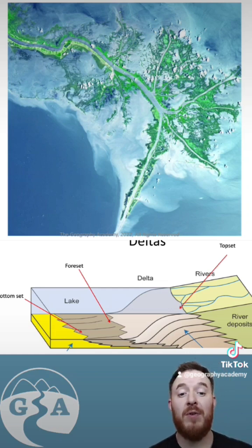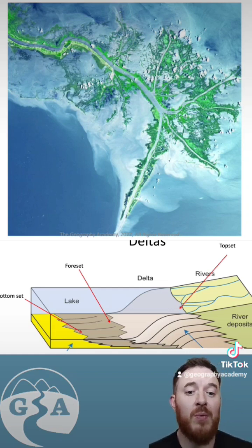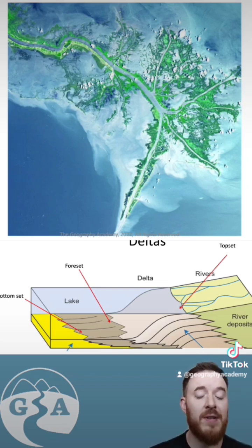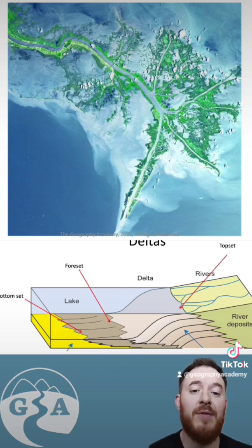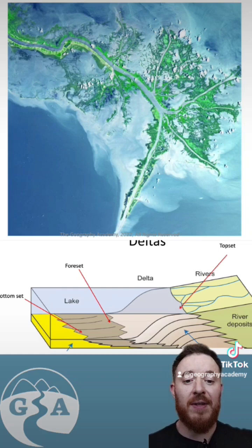The one above here, for example, is a bird's foot delta where the river is the most dominant force, which allows it to actually spread out in these long kind of fingers.